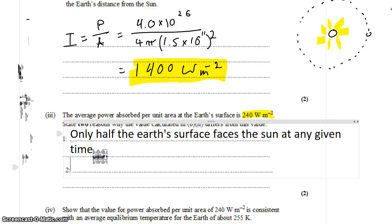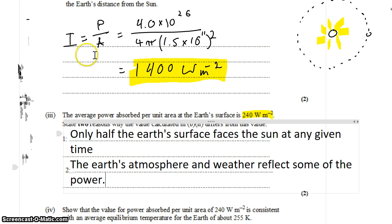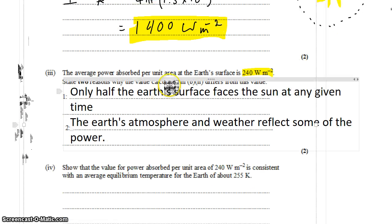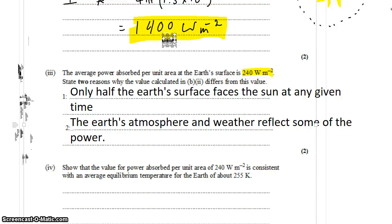The other major reason is that the Earth's atmosphere and weather reflect some of the power. Since we're talking about the average power received at the Earth's surface, any power reflected by the atmosphere before it reaches the surface isn't counted. So even though lots of power enters the space where the Earth is, a significant fraction of it is reflected back into space.